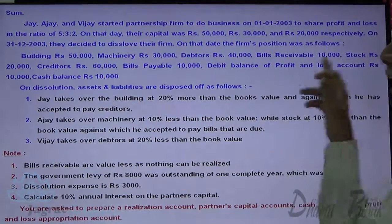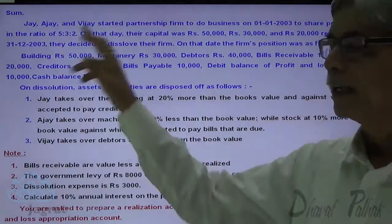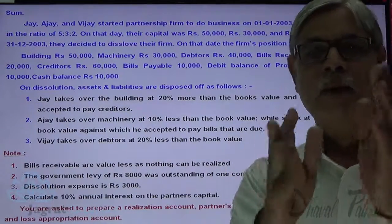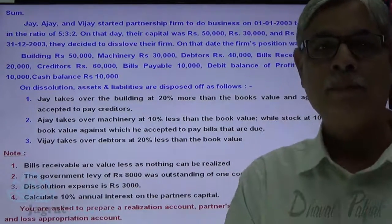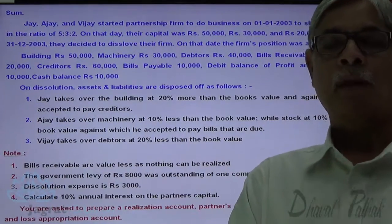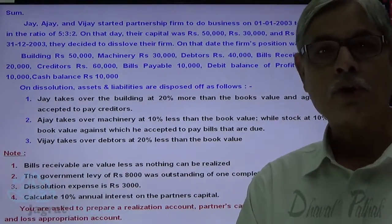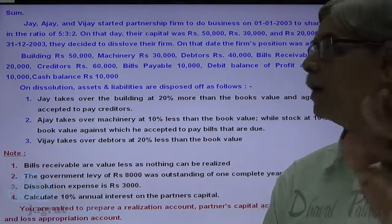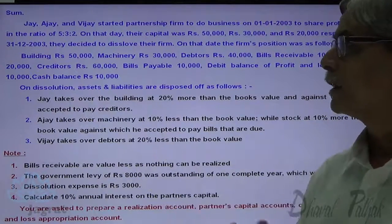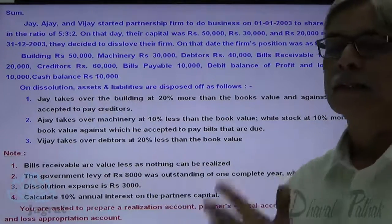The debit balance of the profit and loss account is 10,000. He has already worked out the profit or loss during the year and found a loss of 10,000. Cash value is also 10,000.